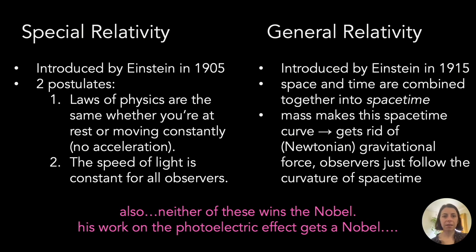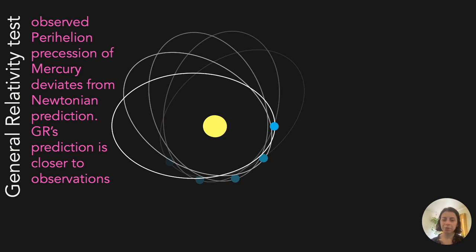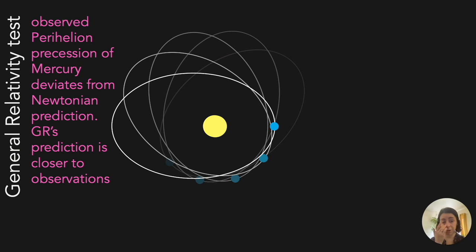Your book discusses some of the tests of general relativity done at this time. One is the perihelion precession of Mercury — Mercury's orbit deviates a little, and it deviates from Newtonian predictions as well. General relativity's predictions are much closer to the observations, and so it was taken as a confirmation — or at least evidence in favor of — general relativity.